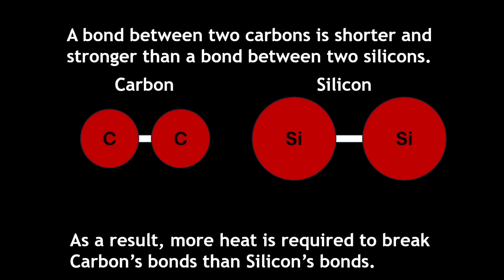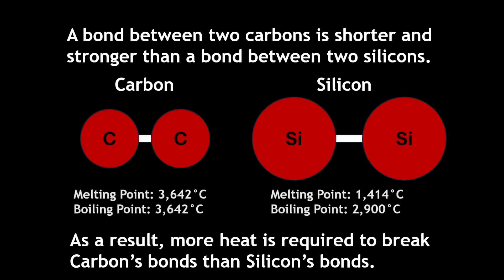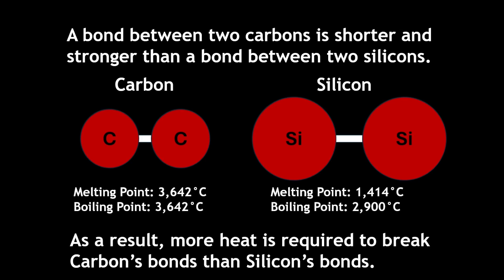While they are both solid at standard temperature and pressure, silicon's weaker bonds give it much lower melting and boiling points, 1,414°C and 2,900°C respectively, than carbon's 3,642°C melting and boiling points.